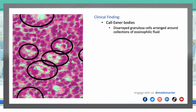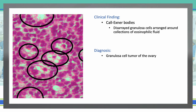Next, Call-Exner bodies. These have a follicle-like appearance — small, eosinophilic, fluid-filled, punched-out spaces between the granulosa cells. The granulosa cells are usually arranged haphazardly around the space — disorganized granulosa cells arranged around collections of eosinophilic fluid. These are known as Call-Exner bodies, and we will see them in granulosa cell tumor of the ovary.